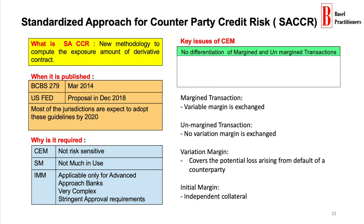Coming to initial margin, it is also known as independent collateral. Variation margin may not always be sufficient to cover a party's positive exposure, e.g. due to delays in receiving collateral, and thus parties may exchange initial margin. Parties typically exchange initial margin at the outset of the derivative contract, in amounts that would reduce the likelihood of a positive exposure amount in the event of the counterparty's default, resulting in over-collateralization. Effectively, the margined transactions will result in lesser exposure amount under SA-CCR when compared with CEM methodology.